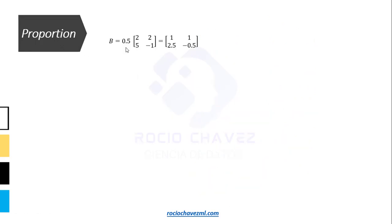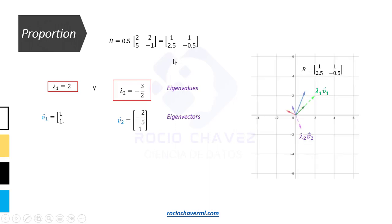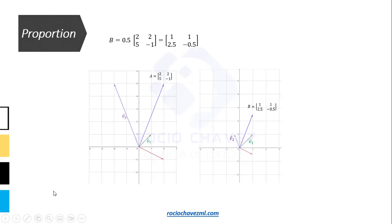Let's see what the eigenvectors of the same matrix scaled by half are, and what relation they have with the eigenvectors of the original matrix. I am going to multiply the matrix by the scalar 0.5. We obtain its eigenvalues and eigenvectors, and place them on the plane. If we compare the eigenvectors of both matrices on the graph, we can see that they have the same direction.